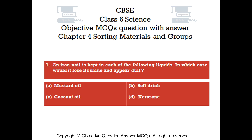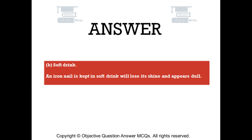Question number 1. An iron nail is kept in each of the following liquids. In which case would it lose its shine and appear dull? Option A: Mustard oil. Option B: Soft drink. Option C: Coconut oil. Option D: Kerosene. The right answer is Option B — Soft drink. An iron nail kept in soft drink will lose its shine and appear dull.